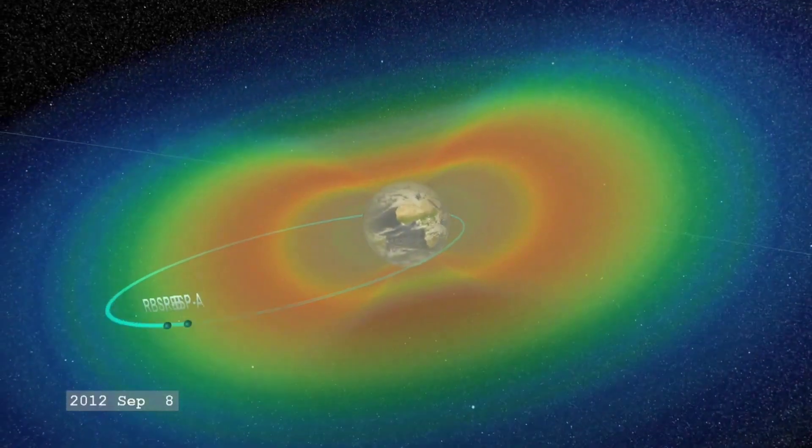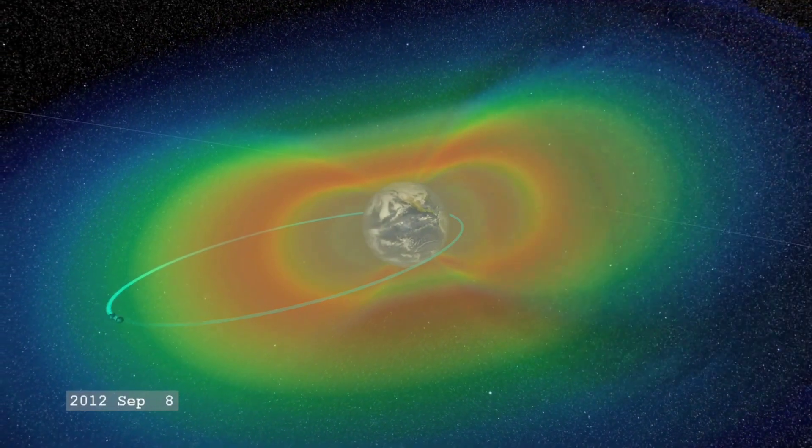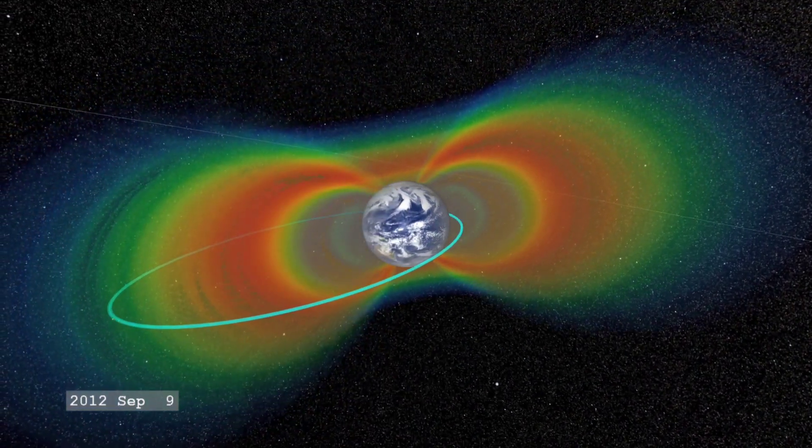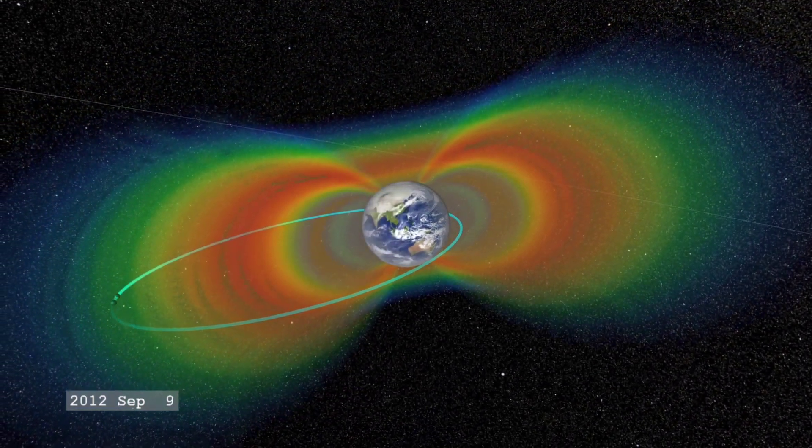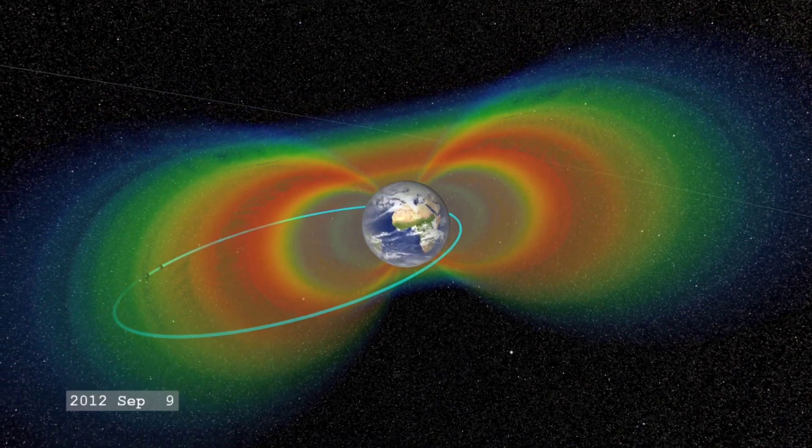In August 2012, two probes were sent to the Van Allen radiation belts that surround Earth to collect data. This zone is in the outer region of Earth's atmosphere and consists of two main donut-shaped belts.